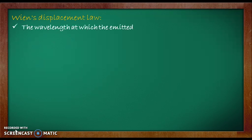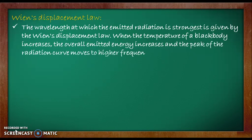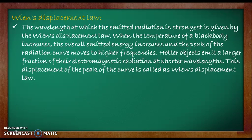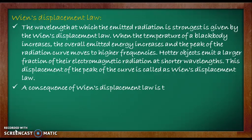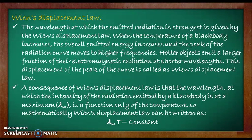The first law is Wien's Displacement Law. The wavelength at which the emitted radiation is strongest is given by Wien's Displacement Law. It states that when the temperature of a blackbody increases, the overall emitted energy increases and the peak of the radiation curve moves towards higher frequencies or lower wavelengths. Hotter objects emit a larger fraction of their electromagnetic radiation at shorter wavelengths. A consequence of Wien's Displacement Law is that the wavelength at which the intensity of emitted radiation is maximum — call it lambda-m — is just a function of the temperature of the blackbody. Mathematically, Wien's Displacement Law can be written as: lambda-m times T equals a constant.